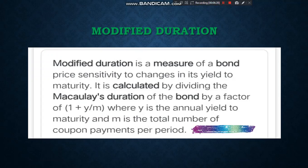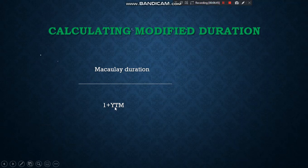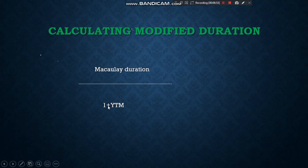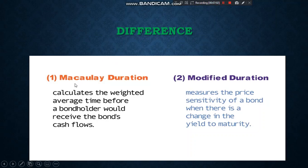Next we have Modified Duration. To calculate it, take the Macaulay Duration and divide by (1 + YTM). Since the YTM here is 10%, you divide by 1.1 to get the Modified Duration value. The key difference: Macaulay Duration calculates the weighted average time and gives an answer in years, while Modified Duration tells you the effect on the bond's price when the yield to maturity changes.